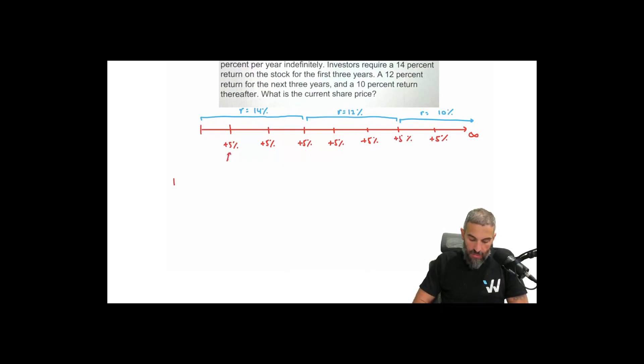So that means this first dividend here, which I would call D1, is 350 times 1.05. So that is 3.675. And I'm going to repeat that process by taking the previous dividend and multiplying it by 1.05. So the next one would be 3.8588. I'll keep four decimal places. So now I'm going to hit fast forward and do this all the way until here.